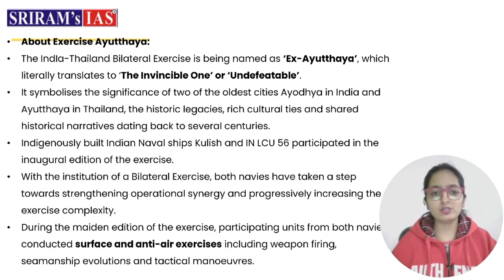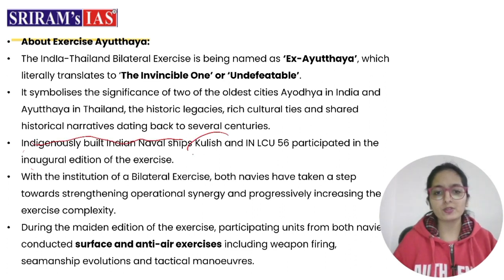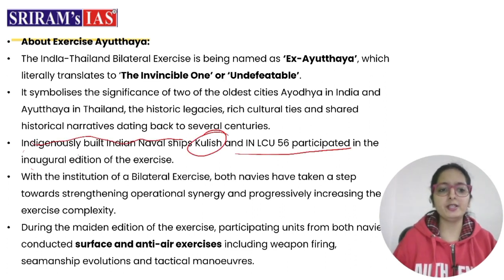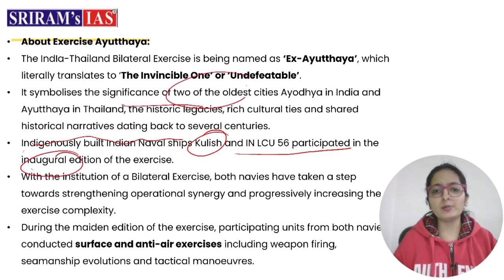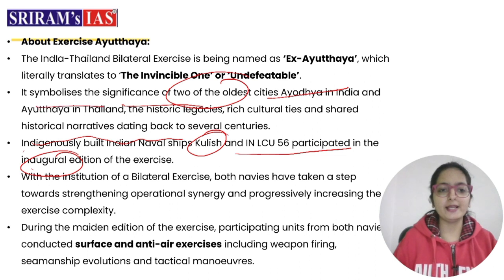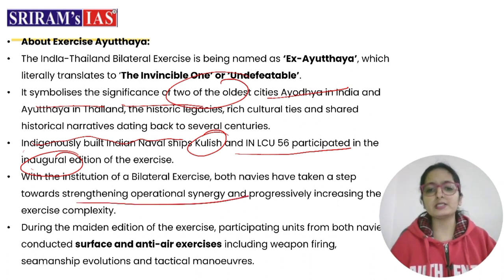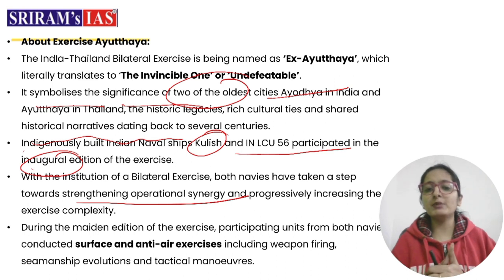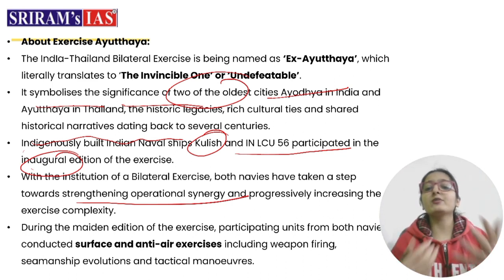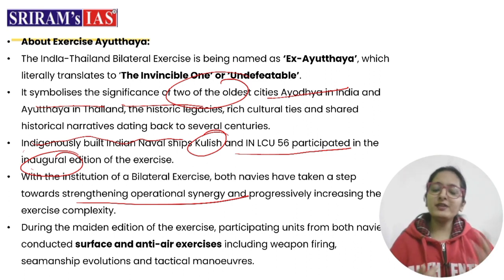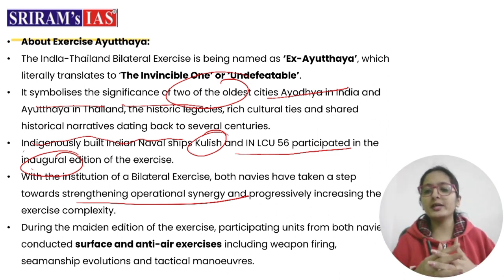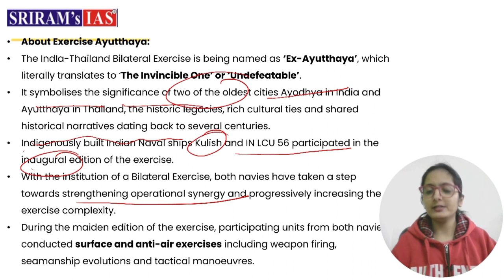The indigenously built Indian Naval Ship Kulish and INLCU 56 participated in the inaugural edition of this exercise. The participating units of both navies were engaged in multi-faceted anti-air exercises, including firing weapons, performing seamanship maneuvers, and practicing tactical moves at sea — enhancing the ability of both navies to operate together in the maritime domain.